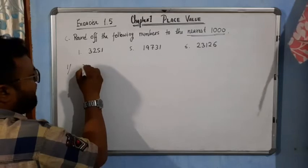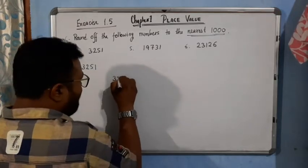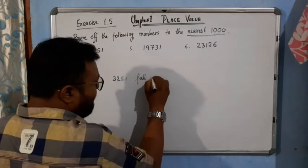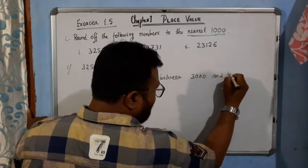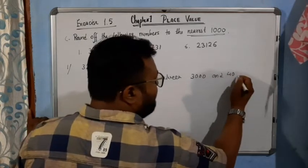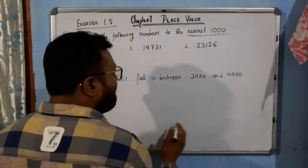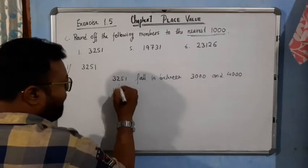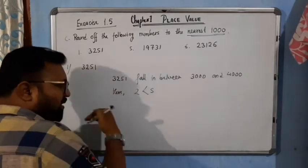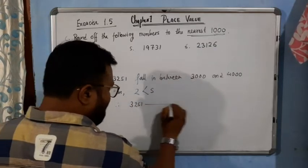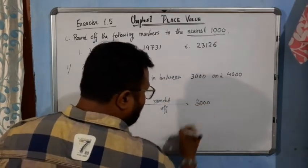For number one: 3251, nearest thousand. We will check all four digits. 3251 falls in between 3000 and 4000. For nearest thousand, we check the hundreds place. Here, the hundreds digit is 2, which is less than 5. Therefore, 3251 rounded off to the nearest thousand will be 3000.